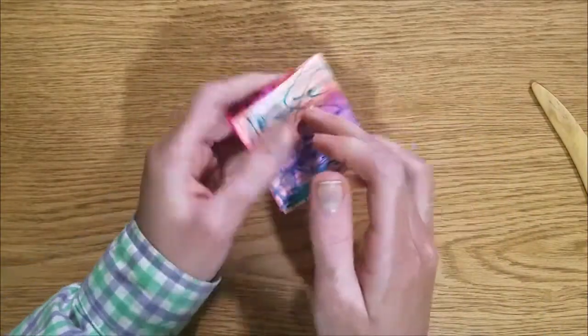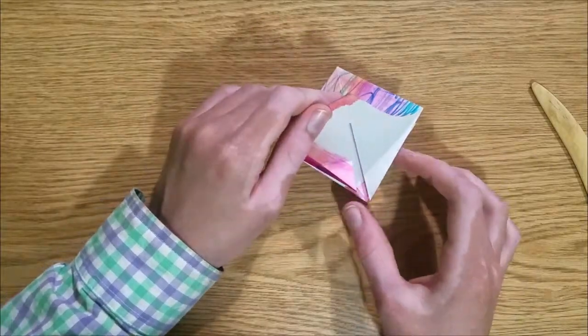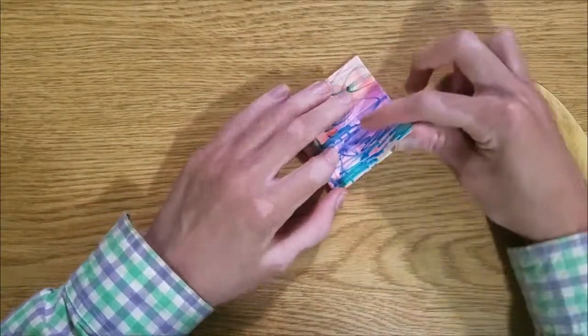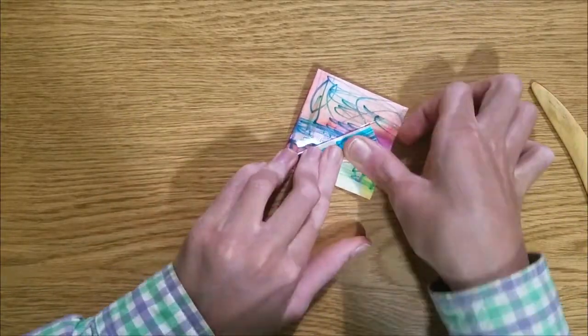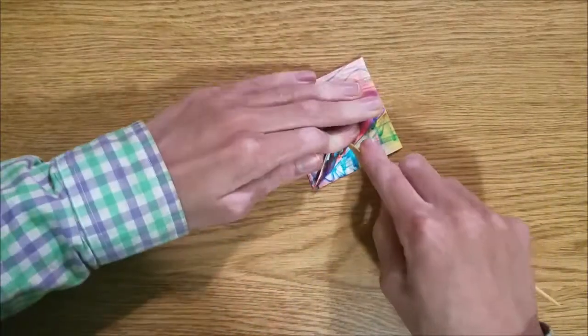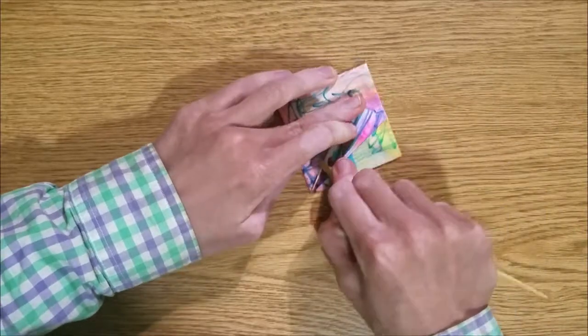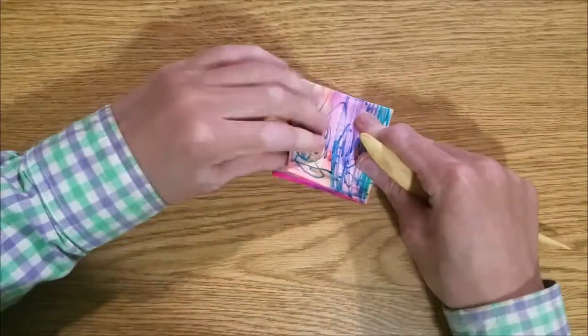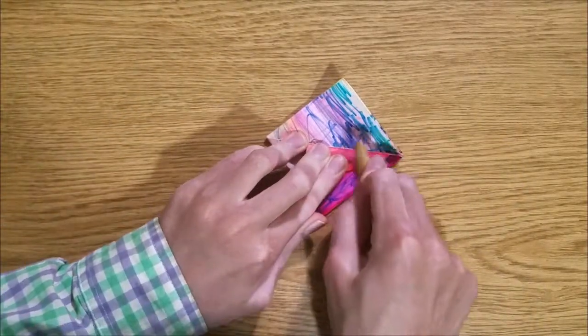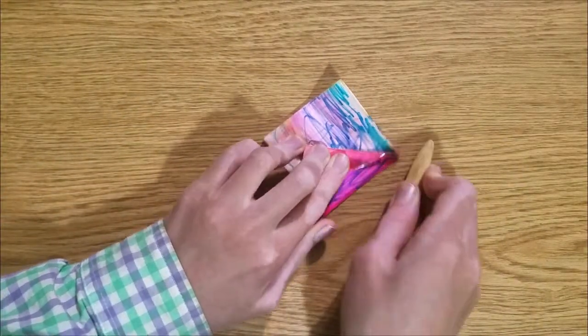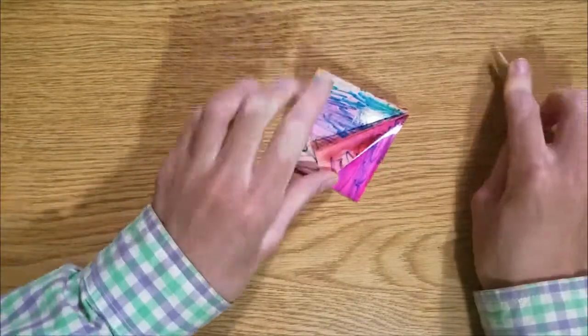Now unfold. What we're going to do is turn over and repeat on this side. Make sure that the open side is down. There we go. Unfold. Now this side. Crease it. Now unfold.